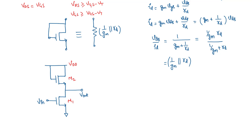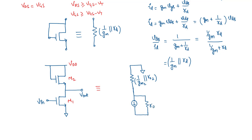Now let us see the small signal equivalent model for this circuit. The first thing is making VDD equal to zero, since it's a DC source. The diode-connected MOSFET equivalent will be a resistance, which is 1 over GM2, representing that it is for the M2 device, in parallel with RD2, and at times we will simply write R02. Both are the same. For MOSFET M1, we have a current source in parallel with R01, and this is GM1 times VGS1. The output is taken across this, which is V0, and we have gate-to-source voltage VGS equal to VIN.